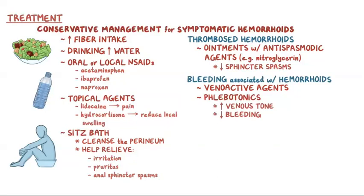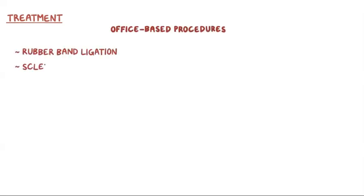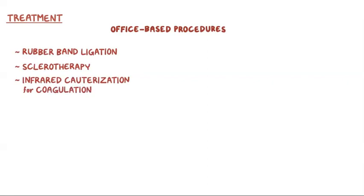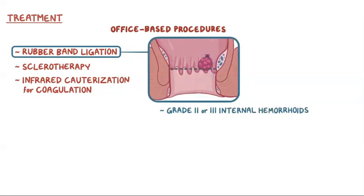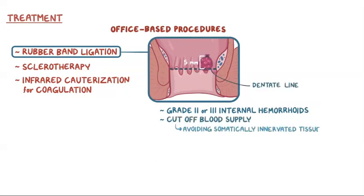Individuals with symptomatic internal hemorrhoids that don't improve with conservative treatment may need a simple office-based procedure like rubber band ligation, sclerotherapy, or infrared cauterization. Rubber band ligation is commonly used for individuals with grade 2 or 3 internal hemorrhoids. Elastic bands are applied onto an internal hemorrhoid at least 5 mm above the dentate line to cut off its blood supply while avoiding any somatically innervated tissue. Within a week, the hemorrhoid tissue becomes necrotic and simply falls off.